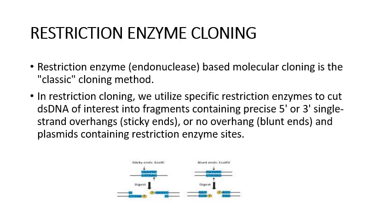Here we use a restriction enzyme called an endonuclease. This restriction enzyme is used to cut our double-stranded DNA — that is the gene of interest — into a fragment, and also our plasmid to which our gene of interest is going to be ligated. This restriction enzyme may cause two different types of cuts: an overhang or without overhang, which we call sticky ends and blunt ends.